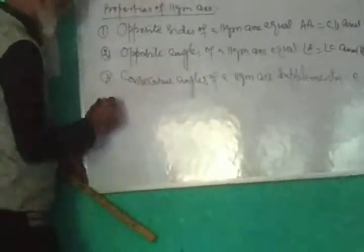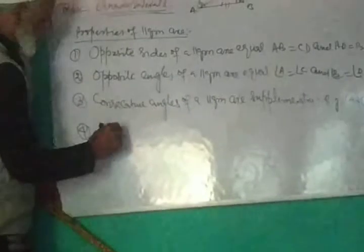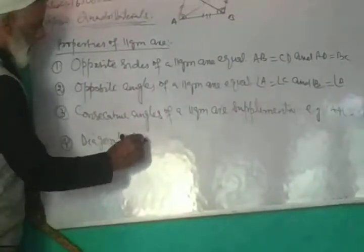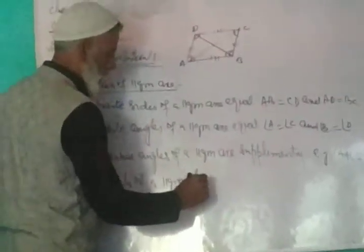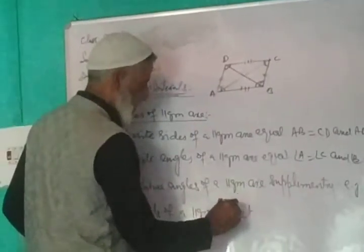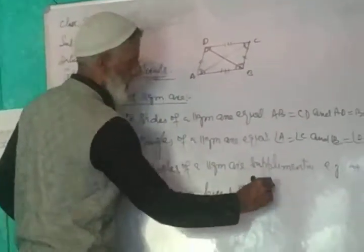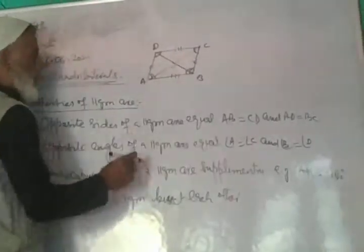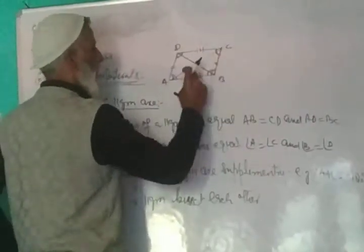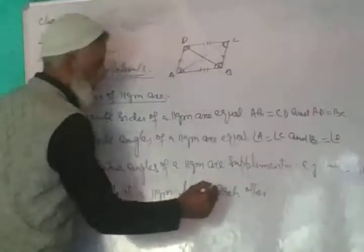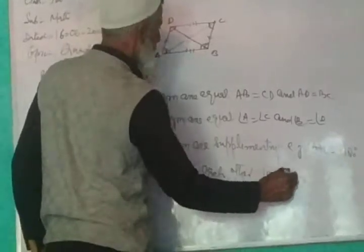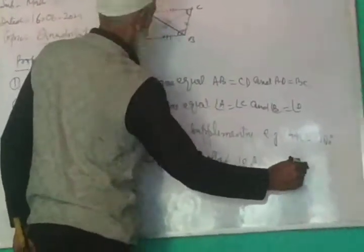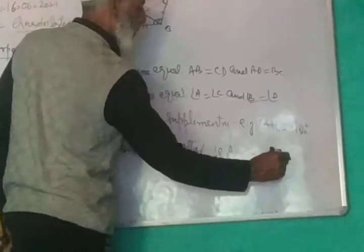Property number 4: the diagonals of a parallelogram bisect each other. AO is equal to OC, and OB is equal to OD. So the diagonals bisect each other at point O.